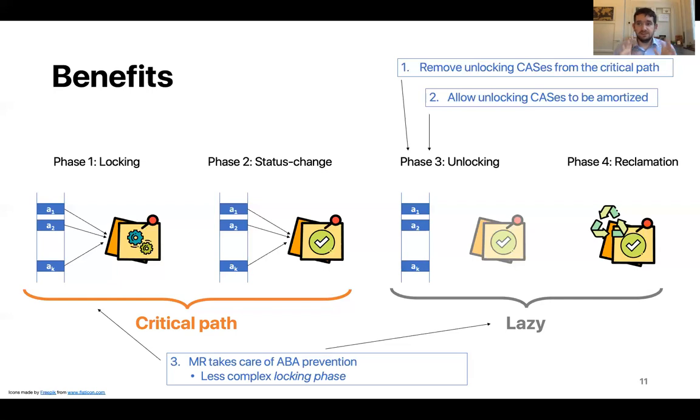Okay, so these three benefits taken together mean that we have less complexity on the critical path. And this allows us to have the k plus one complexity that I mentioned. And it means that there are opportunities to amortize the work of the critical path.